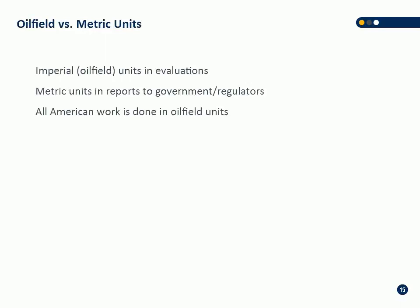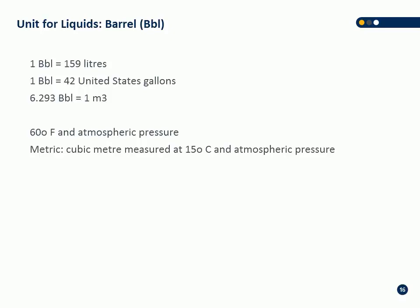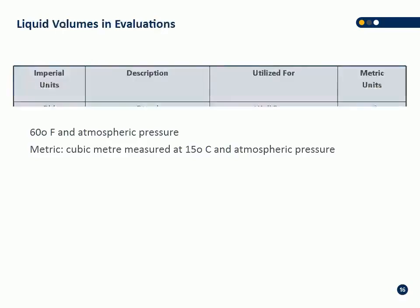On oil field units versus metric units — the oil field doesn't necessarily choose imperial or metric; there's a mixture of both in standards. Most oil field units are imperial, so most disclosure would be imperial. Metric units are usually used for government disclosure in certain parts of the world, and in the US all work is done in oil field, mostly imperial. The standard unit for oil is the barrel: one barrel equals 159 liters, 42 US gallons, with a conversion to cubic meters of 6.29. The standard barrel is measured at atmospheric pressure and 60°F; the metric standard cubic meter is measured at 15°C and atmospheric pressure.